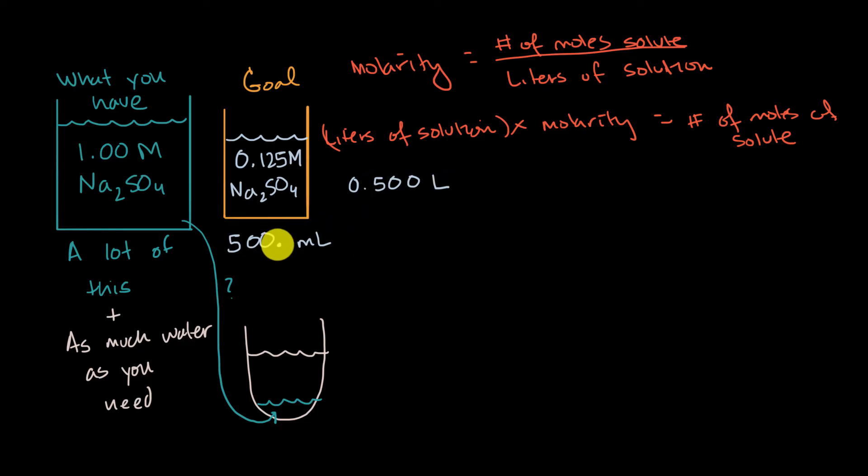And this little decimal point right over here makes it clear that we're dealing with three significant figures that we've rounded to the nearest one when we have this goal right over here. So our goal is to have half a liter of solution at a molarity of 0.125 molar, and then that is gonna give us the number of moles we need.